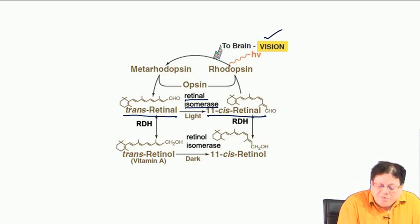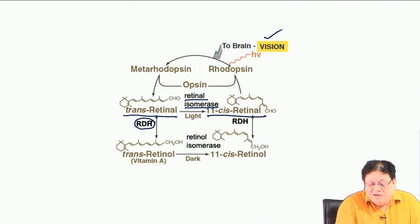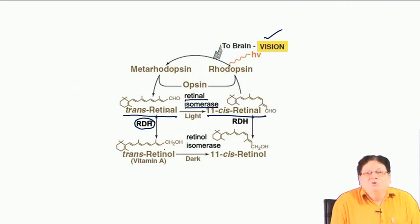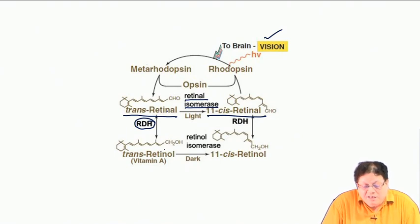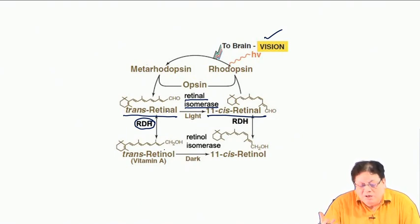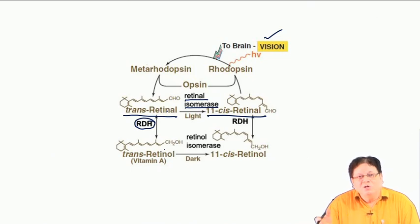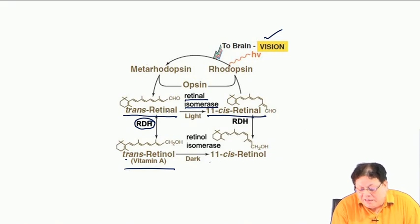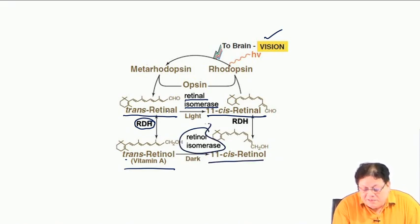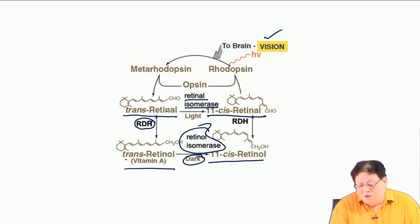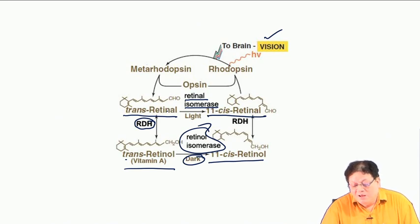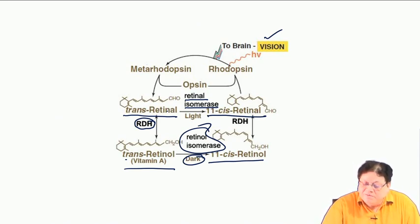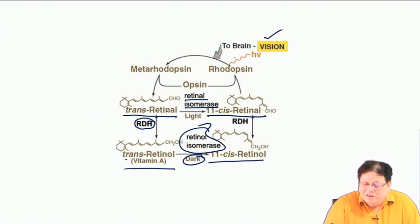You can also have retinol dehydrogenase reduce the aldehyde back to the alcohol, since it is a redox enzyme that can either oxidize or reduce depending on the substrate. It goes to trans retinol, then retinal isomerase — which works in the dark — converts it to 11-cis retinol, and this is a reversible process.